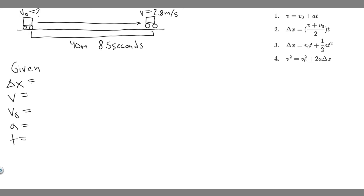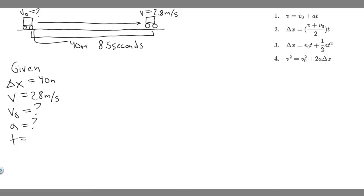So you just want to write 'given' and then write down the five variables: delta x, v, v sub zero, a, and t. Delta x is your change in position — how far is it going to travel? We know it travels 40 meters, so delta x equals 40 meters. V is its final velocity, which is 2.8 meters per second. V sub zero is the truck's original speed — we don't know, so that's a question mark. Acceleration, we don't know either, so that's also a question mark. And t, the time, we do know — it's 8.5 seconds, that's how long it takes to travel 40 meters.